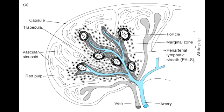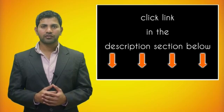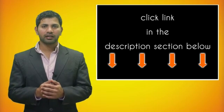What is one of the functions of macrophages of the spleen? One of the functions of the spleen's macrophages is to remove encapsulated bacteria.